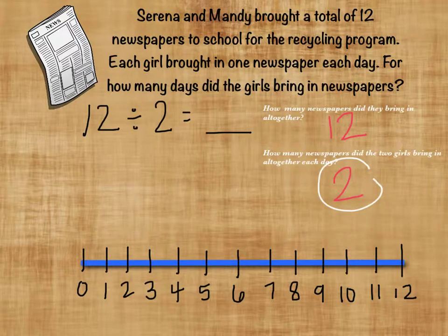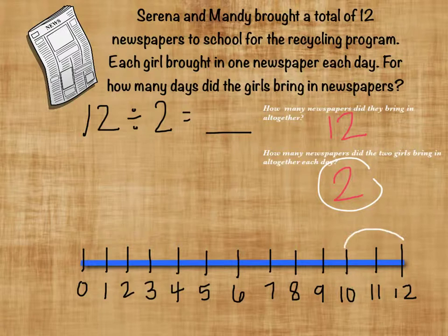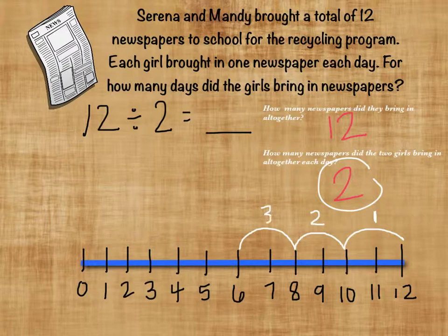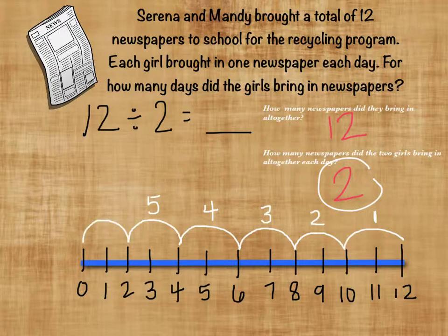So we're going to jump backwards from 12. Jump from 12 to 10 — that's one jump, or one day. Then jump from 10 to 8 — that's the second day. 8 jumps to 6 — that's the third day. 6 jumps to 4 — that's the fourth day. 4 jumps to 2 — that's the fifth day. And 2 jumps to 0 — that's the sixth jump, or the last day.